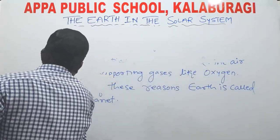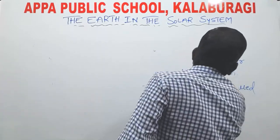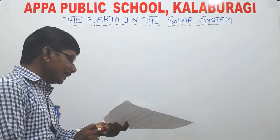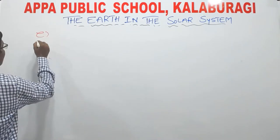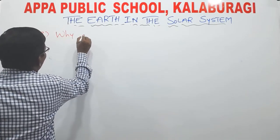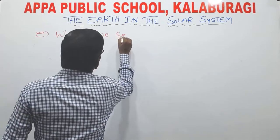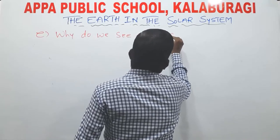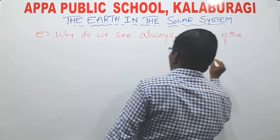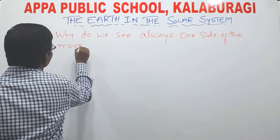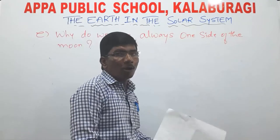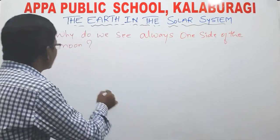So we have discussed question number four and its answer. Now question number five — why do we see always one side of the moon? This is the question. Let me get the answer.